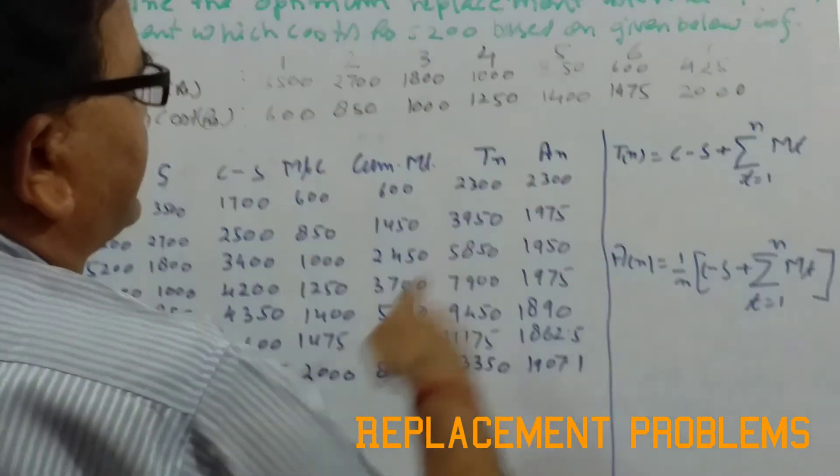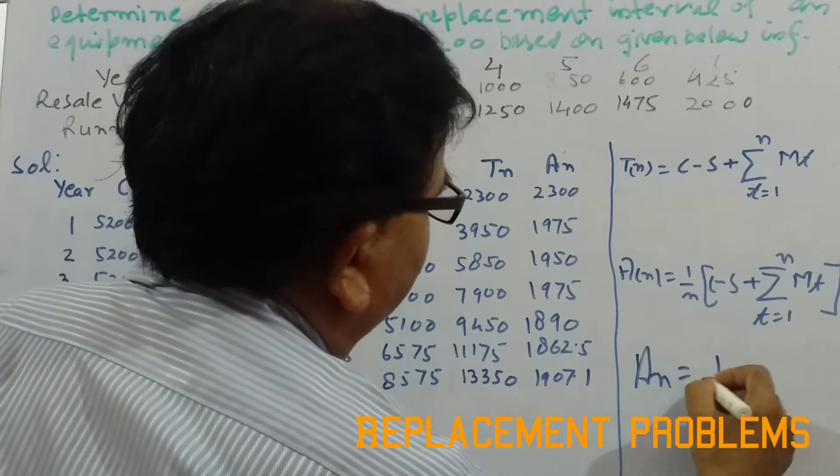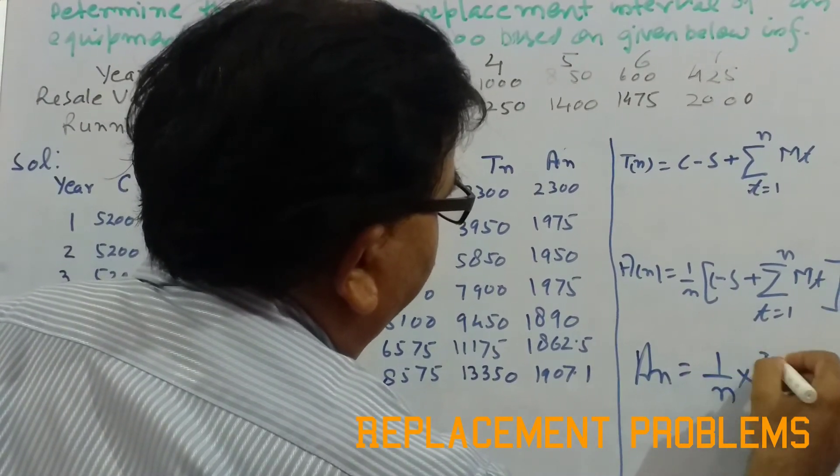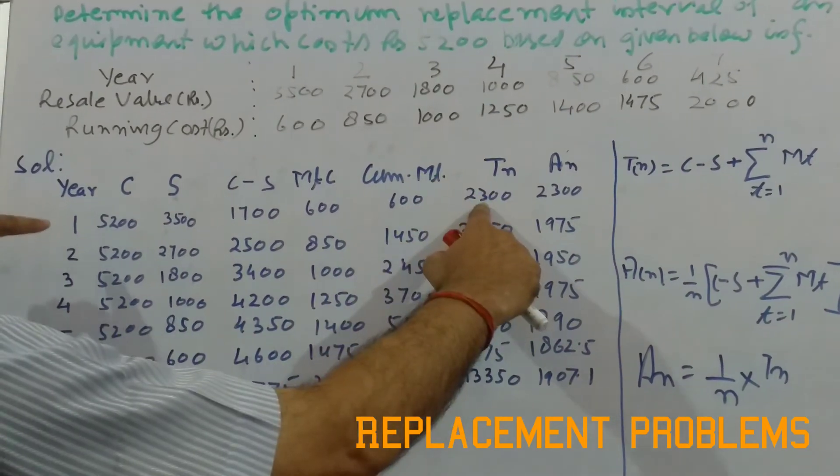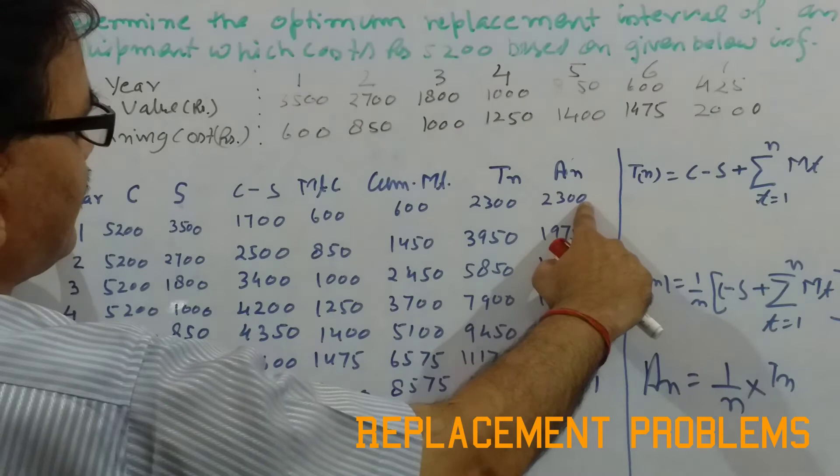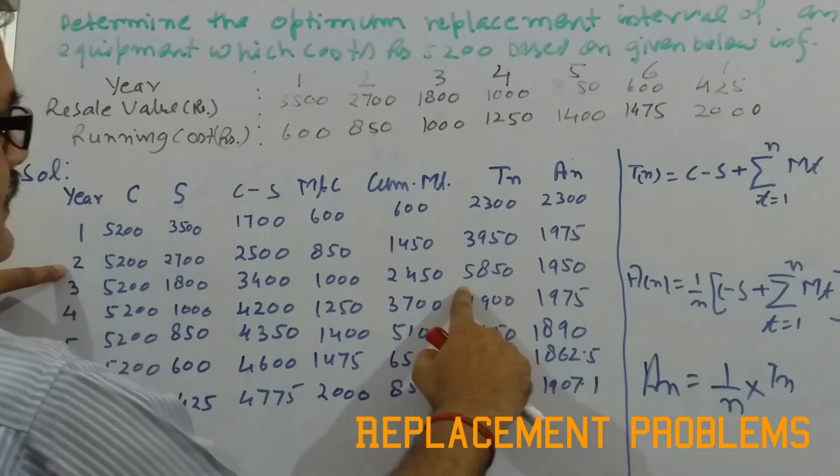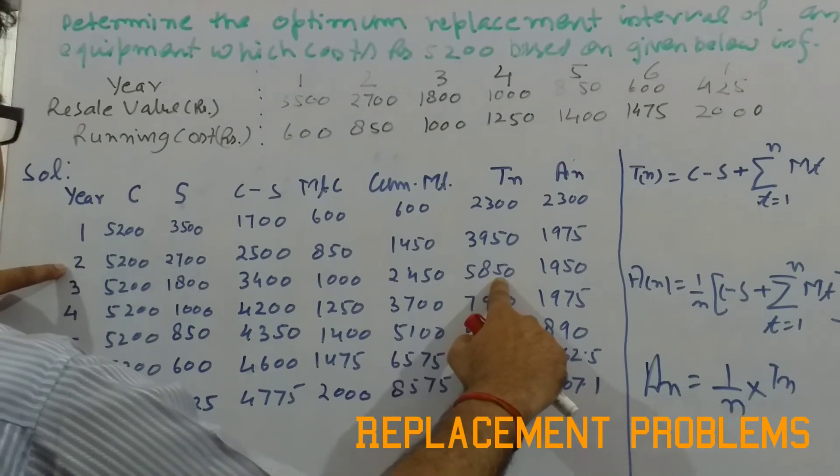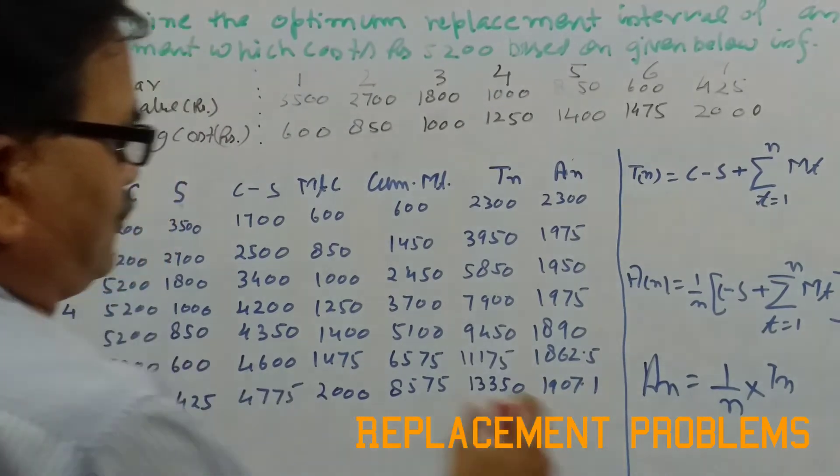We have calculated the average cost now. The average cost we can calculate as 1 by N into TN, or TN by N, that means the total cost divided by the number of years. So 2300 divided by 1, that is 2300. We have calculated the average cost: 2950 divided by 2 that is 2975, 5850 divided by 3, and so on.